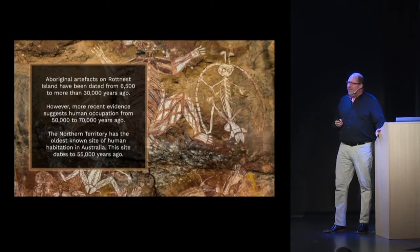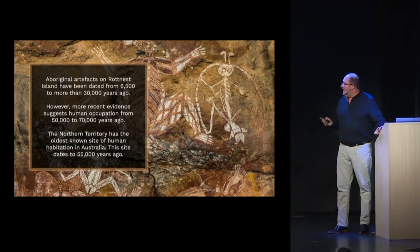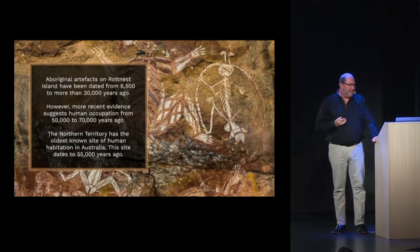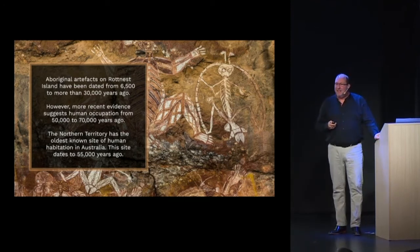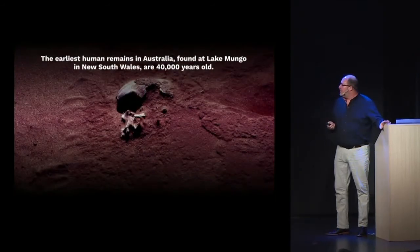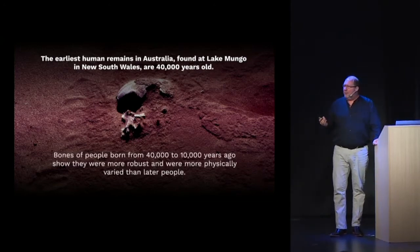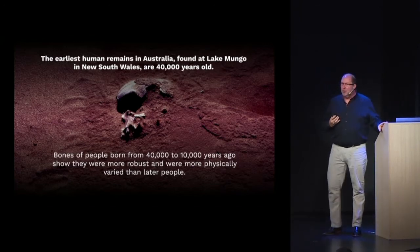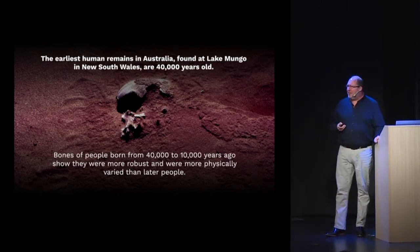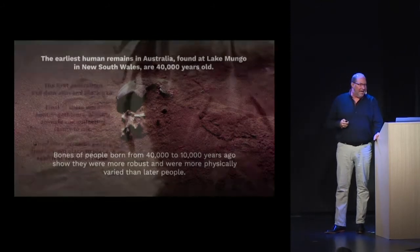Aboriginal artifacts on Rottnest Island have been dated from 6,500 years ago to more than 30,000 years. More recent evidence suggests human occupation from 50,000 to 70,000 years ago, and there are areas of human habitation dating back to 55,000 years. The earliest human remains were found at Lake Mungo, 40,000 years old, and bones show they were more robust, strong, hardy people, even more physically varied than people are today.